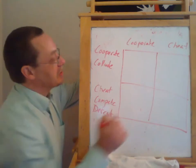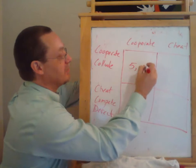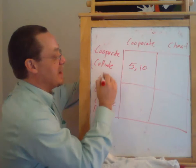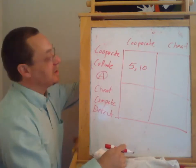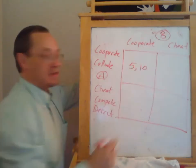So let's suppose if they cooperate, if they cooperate, Firm A, the imaginatively named Firm A, gets profits of five and Firm B gets profits of ten.